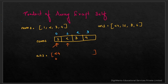Moving to index 1, we skip 2 and calculate 1 × 3 × 4 = 12, which is stored at answer[1]. For index 2, we skip 3 and calculate 1 × 2 × 4 = 8. For index 3, we calculate 1 × 2 × 3 = 6. So I hope you understand how we get the answer array.